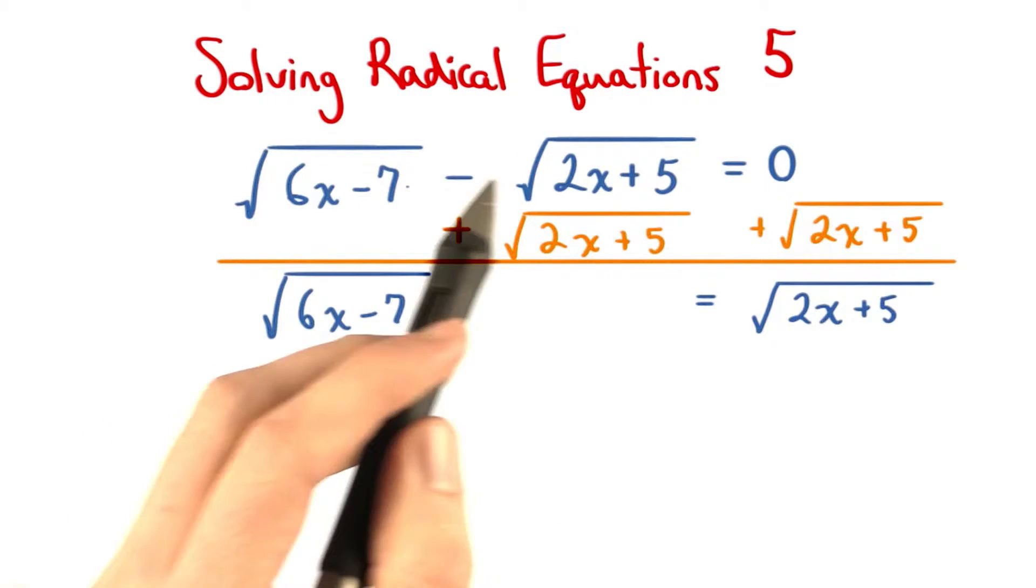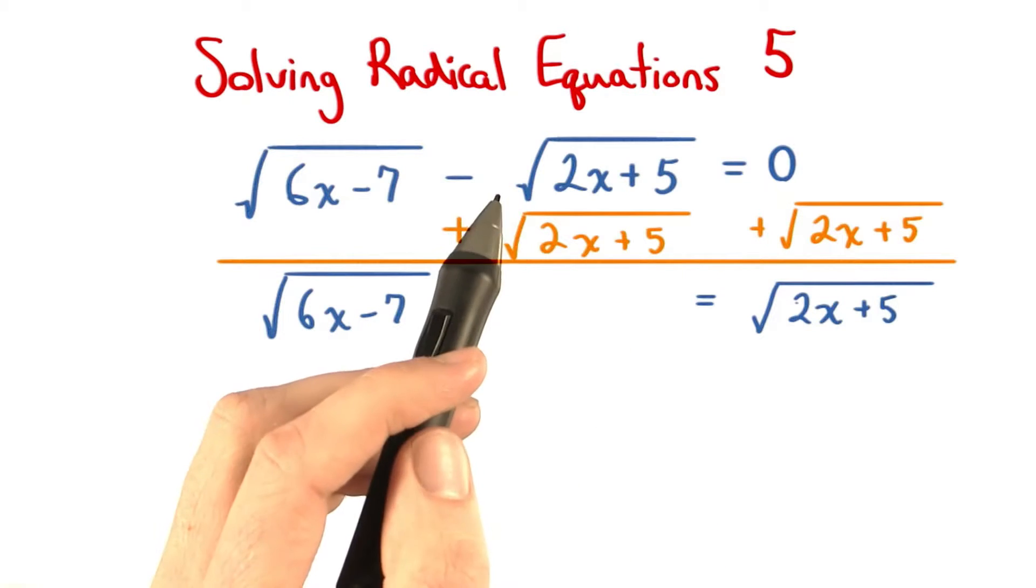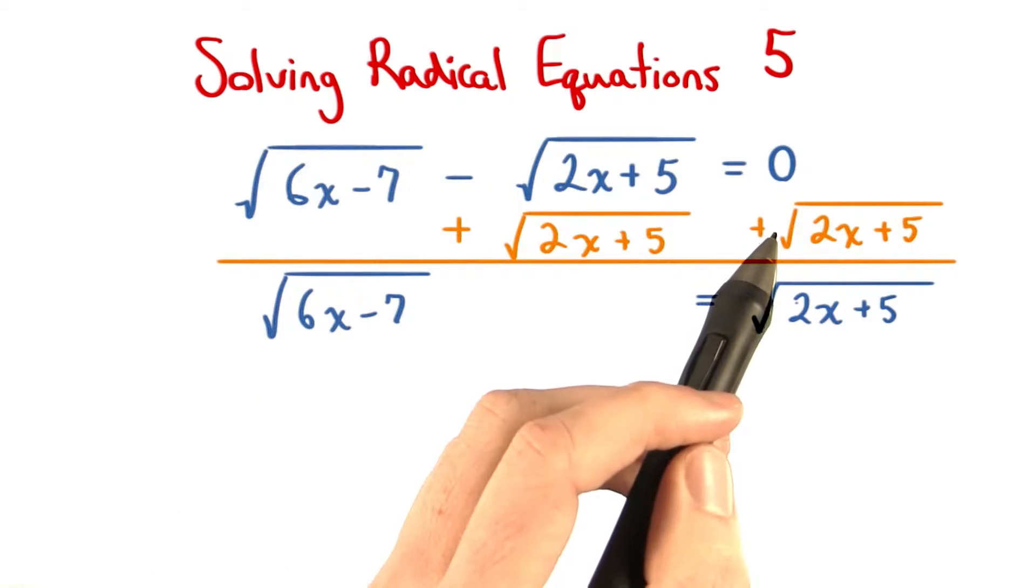First, we want to get each radical on one side of the equal sign. So, we can add this radical to both sides of the equation.